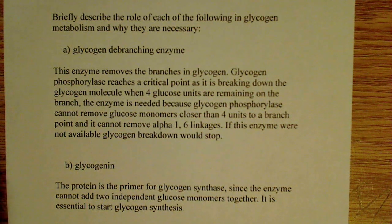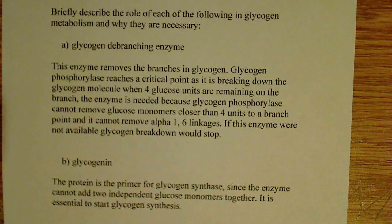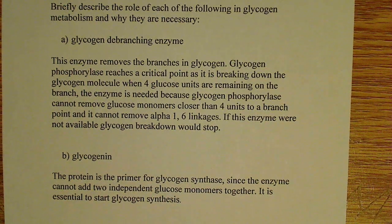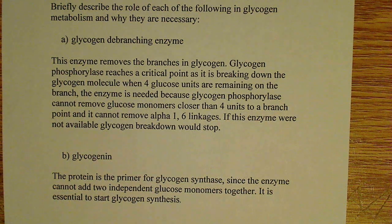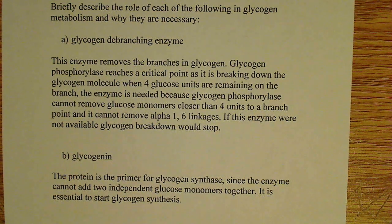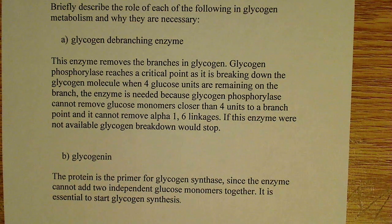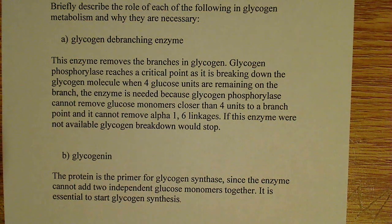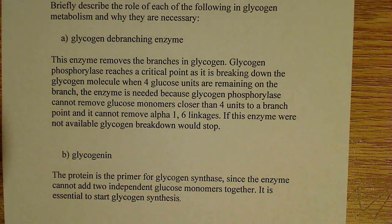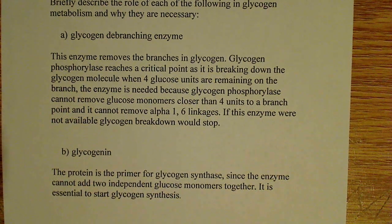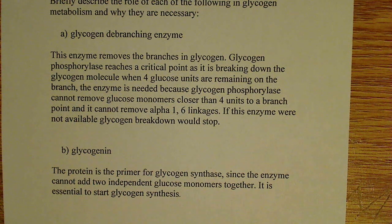The first one is glycogen de-branching enzyme. Just from the name alone, you should see where this is going. Glycogen is highly branched, and the reason there are a lot of branches is because, unlike other molecules, the branches allow for a lot of different starting points for breakdown. The goal of breaking down glycogen is to release glucose into the blood as rapidly as possible, and the branching helps with that.